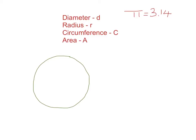Today we're going to talk about diameter, radius, circumference, and area. The first thing we're going to look at is what each of these is represented by. Diameter is represented by a lowercase d, radius by a lowercase r, circumference by a capital C, and area by a capital A.